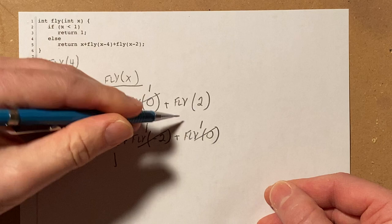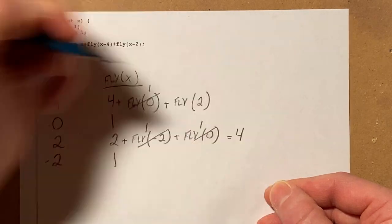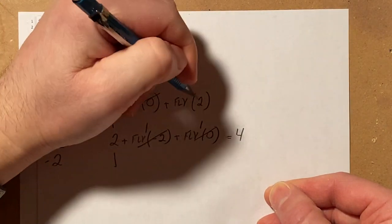But now here I can see 2 plus 1 plus 1. This equals 4. So fly of 2 is 4.